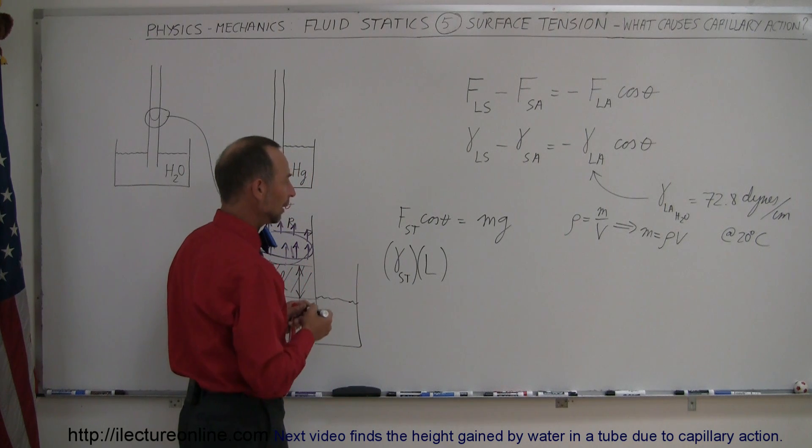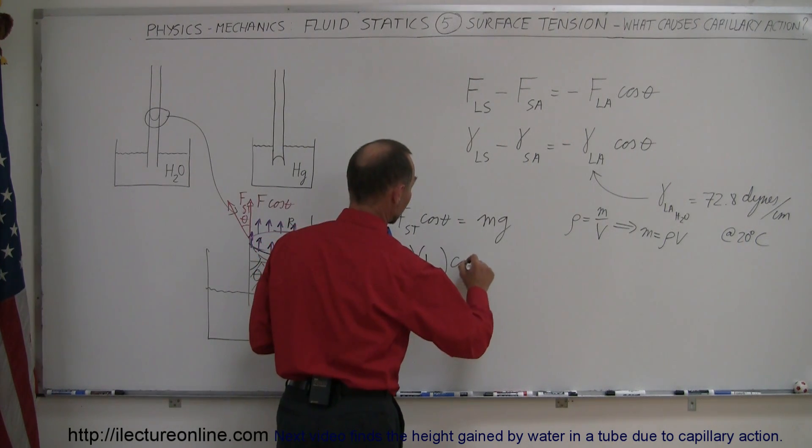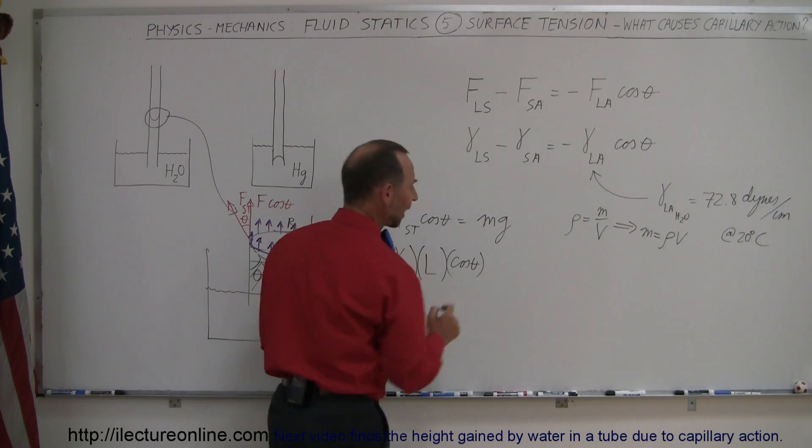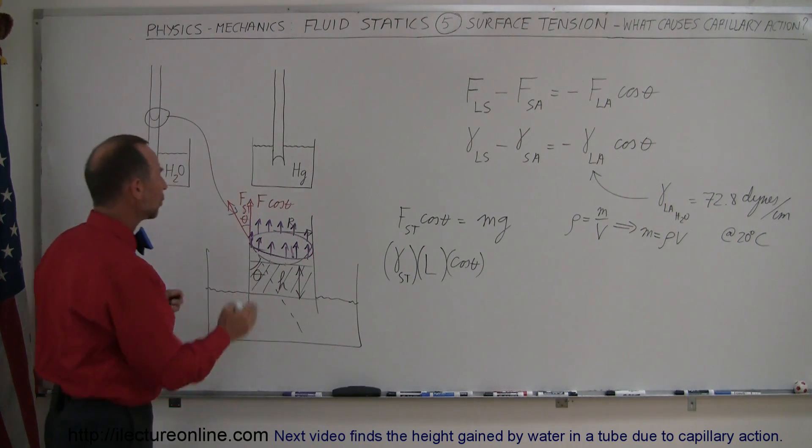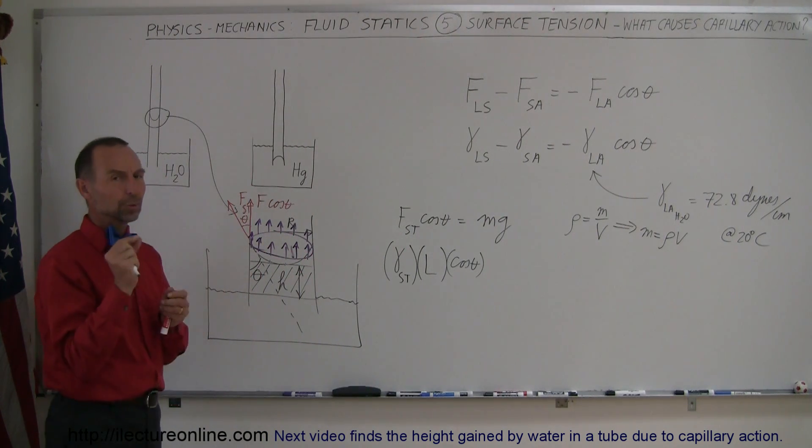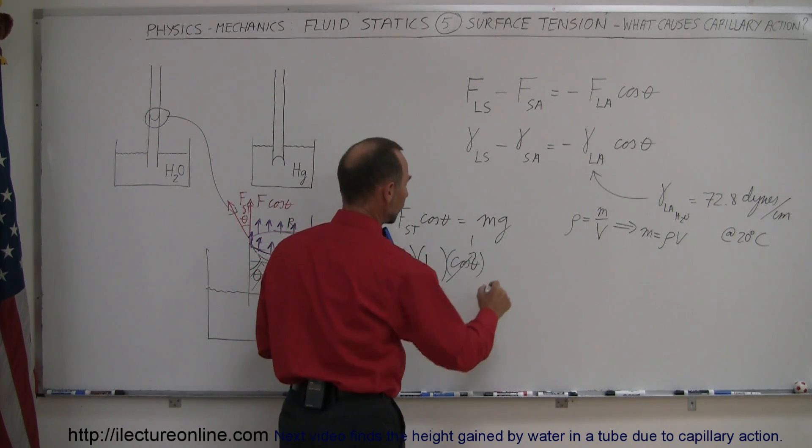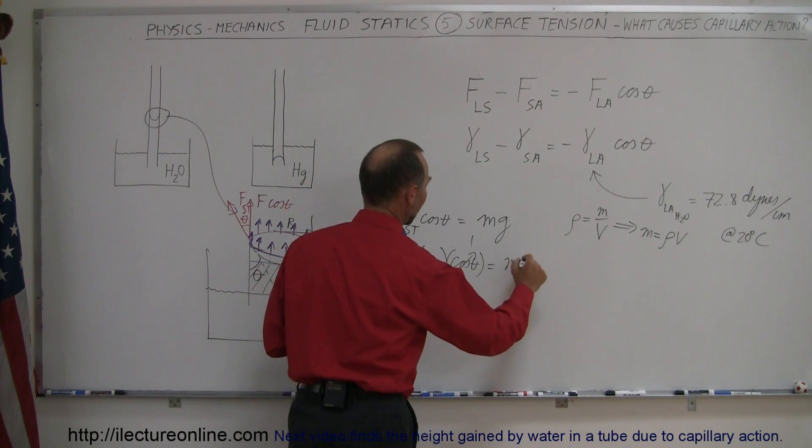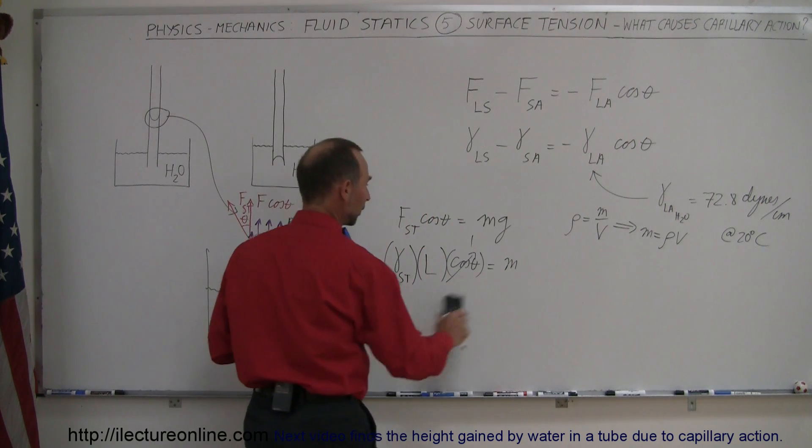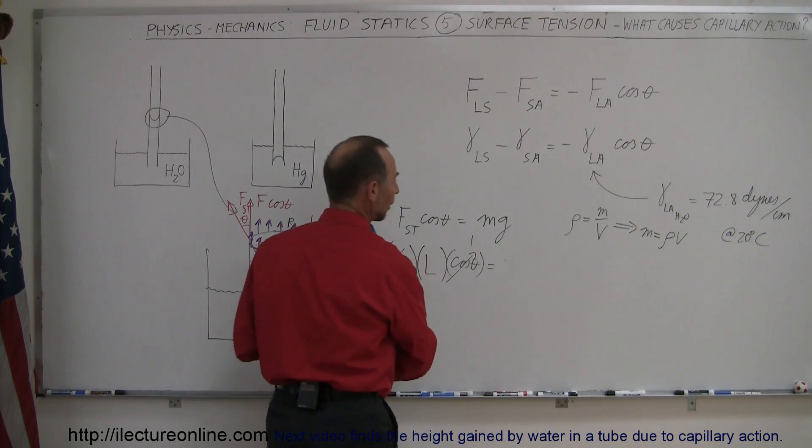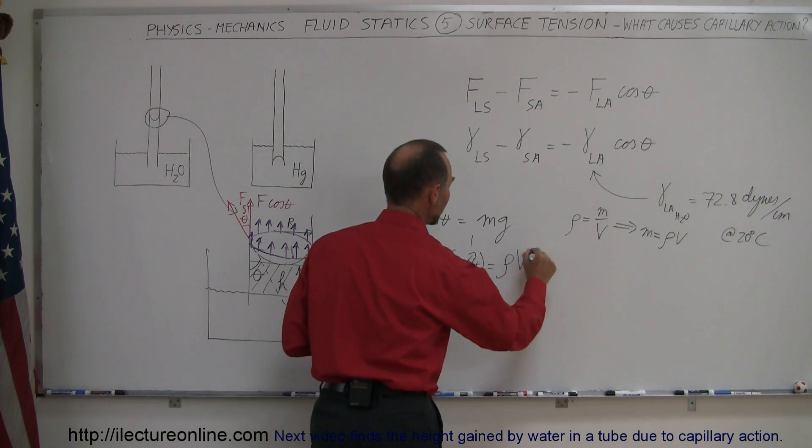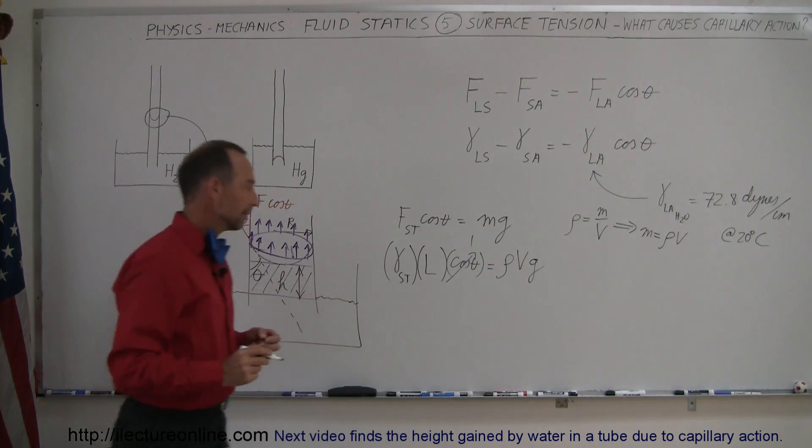Let's see here. That would be times the cosine of the angle, cosine of the angle theta. Now it turns out for the contact angle between water and glass, that angle is pretty well near zero. So we can call this equal to one, and we can ignore that. That would be equal to m times g. Now, I'm going to replace that by rho v. So we have rho v g.